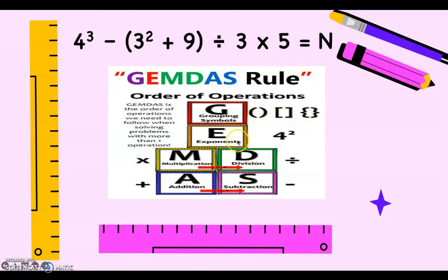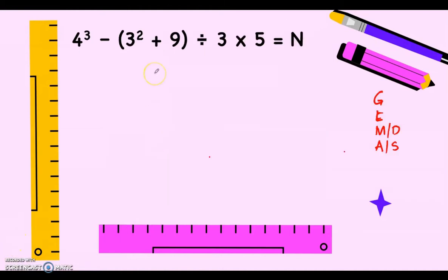Then after grouping symbols we have the exponents, then multiplication and/or division — whichever comes first from left to right. And after multiplication or division, next is addition and subtraction, whichever comes first from left to right. Let's answer the equation using the GEMDAS rule: groupings, exponent, multiplication and/or division whichever comes first, addition and subtraction whichever comes first.